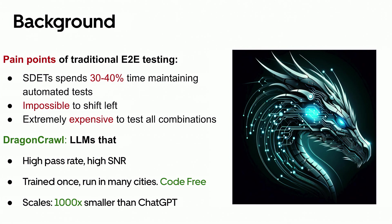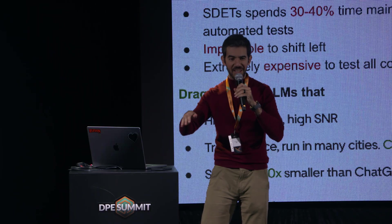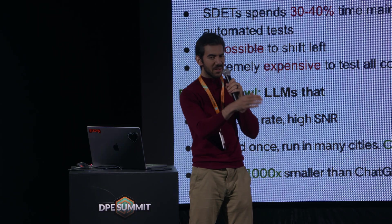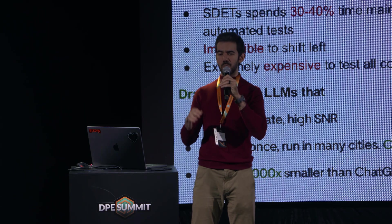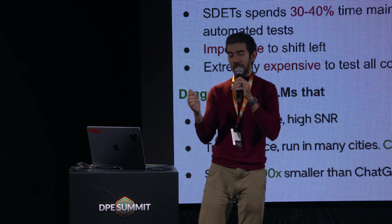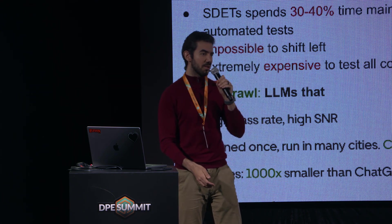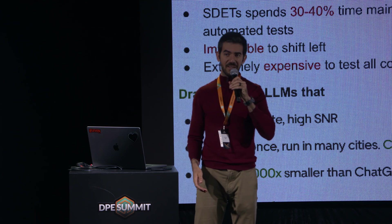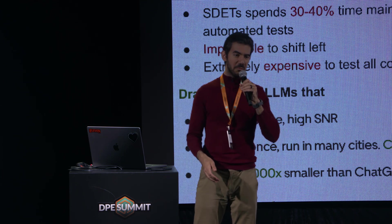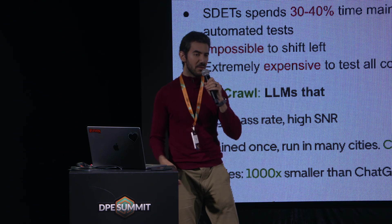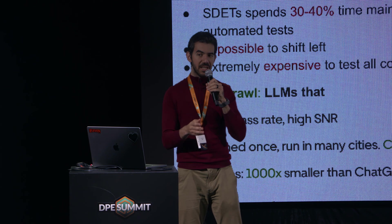Now, why do we need Dragon and Crawl — LLMs for mobile testing? Traditional mobile testing, usually done with scripts like Appium, is pretty fragile. Every time there's a change in a button — the text, location, or IDs — even small things break the tests. Not because they're bugs, but simply because those scripts need to be updated.